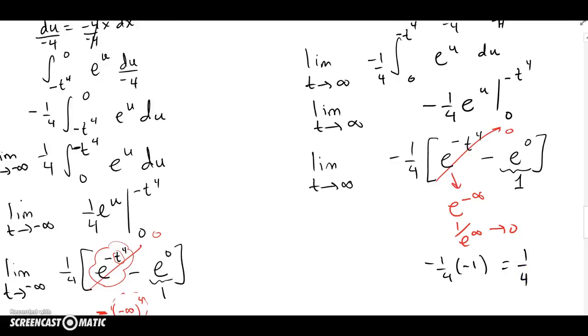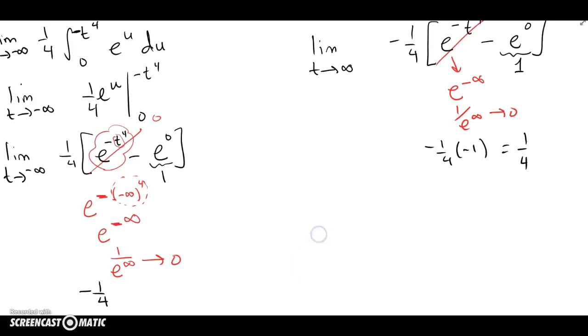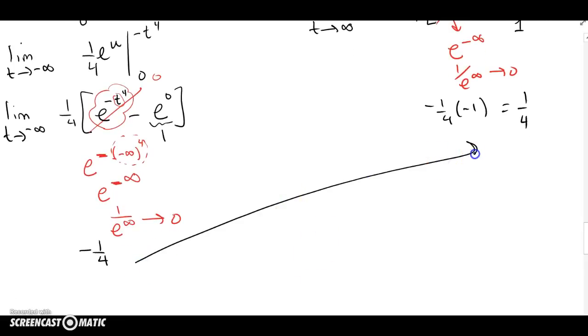So both pieces gave us finite values, but as we had suspected, when we add the two pieces, we end up with 0, a convergent integral.